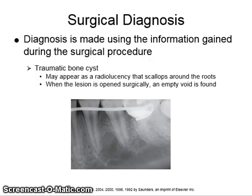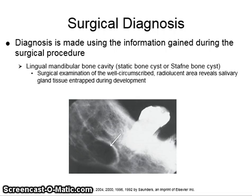Surgical diagnosis involves gaining surgical access to the area of the lesion, and the diagnosis is made using information gained during the surgical procedure. For example, a traumatic bone cyst may appear as a radiolucency that scallops around the roots, and when the lesion is opened surgically, an empty void is found. Another example is this radiolucent lesion pointed to by the white arrow — a lingual mandibular bone concavity, also known as a static bone cyst or Staphne's bone cyst. Surgical examination reveals salivary gland tissue entrapped during development.